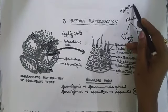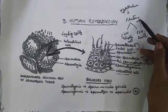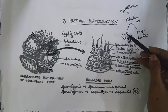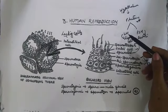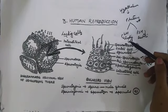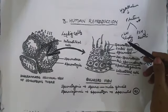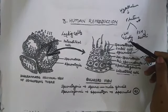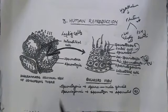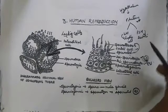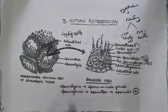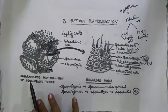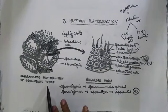The hypothalamus stimulates the pituitary. The pituitary releases luteinizing hormone and follicle stimulating hormone. Luteinizing hormone allows the Leydig cell to function, and the Leydig cell is responsible for spermatogenesis. Follicle stimulating hormone influences the function of the Sertoli cell.